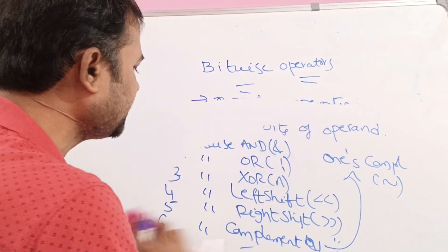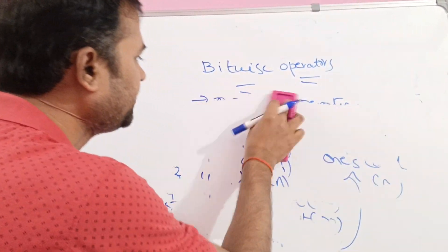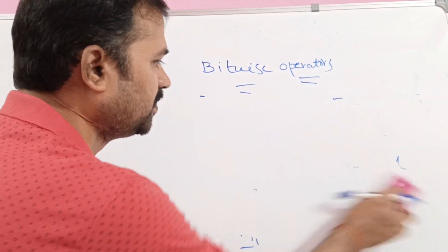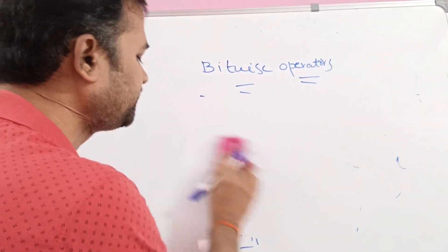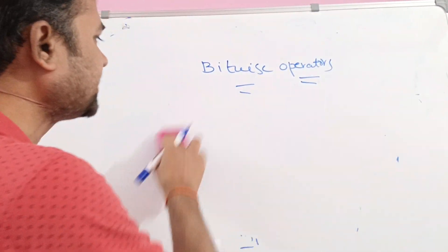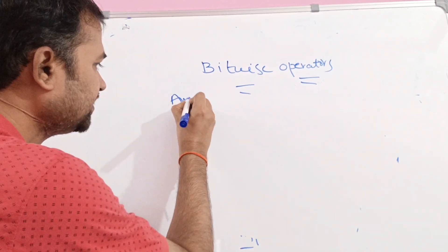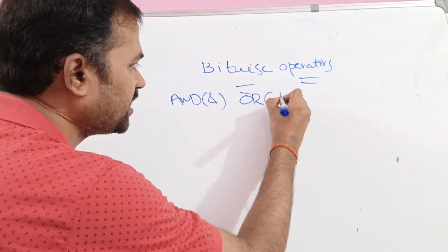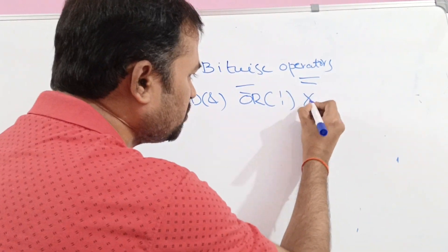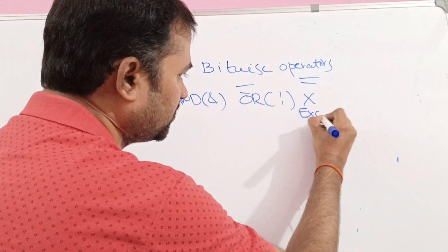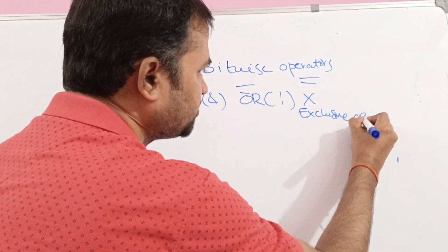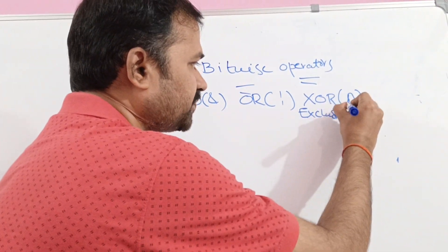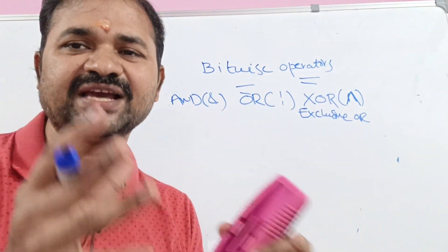The first three operators — bitwise AND, bitwise OR, and bitwise XOR — will be discussed together in parallel. Let us see them with the help of a truth table. Bitwise AND is denoted by the ampersand symbol. Bitwise OR is denoted by the pipe symbol. Bitwise XOR is denoted by the caret (cap/power) symbol.